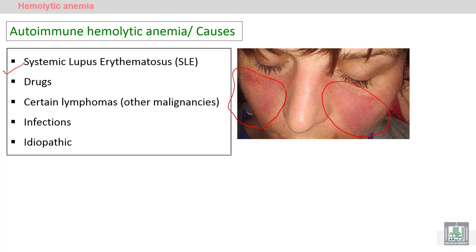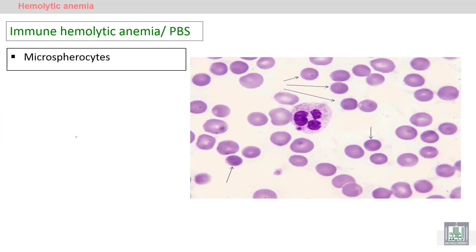Drugs acting on the red blood cells may also lead to production of autoantibodies and destruction of the red blood cells. Malignant cells, drugs, and infections can stimulate the immune system to form autoantibodies. Sometimes we don't know the cause, so it is called idiopathic — we cannot identify the cause of the autoimmune hemolytic anemia.